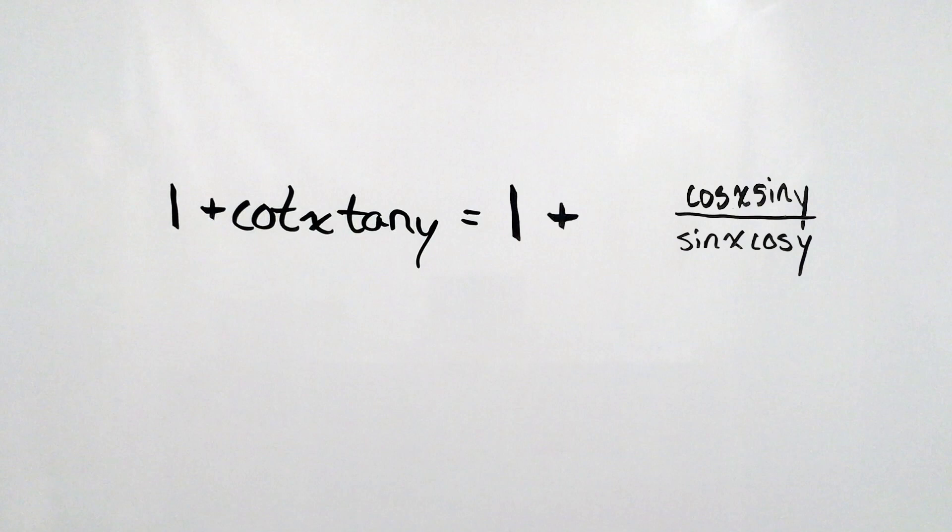So let's look at what's left. If you've been studying identities, you know that cos over sine is cotangent, and sine over cos is tan. Replacing what's there with cotangent of x times tan of y allows us to conclude that the left-hand side does in fact equal the right.